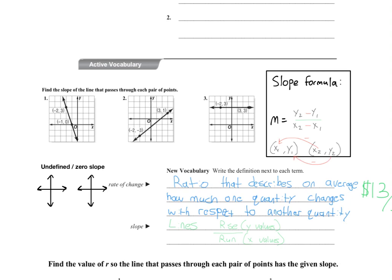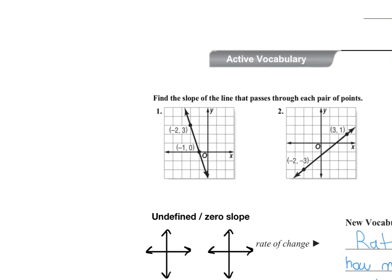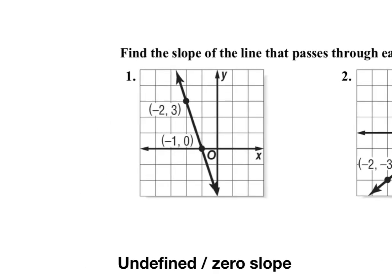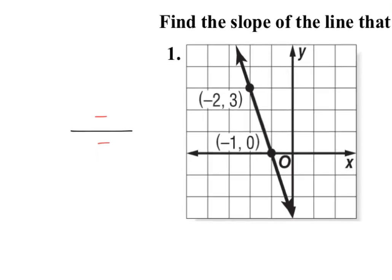So here, we're going to look at these, and it says, find the slope of the line that passes through each pair of points. We're going to do this both visually and with the equation. All right. So I'm going to first do this with the equation.